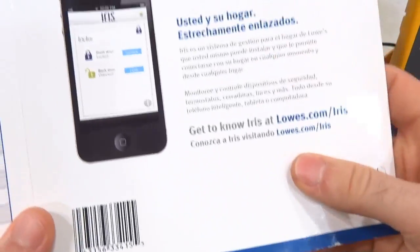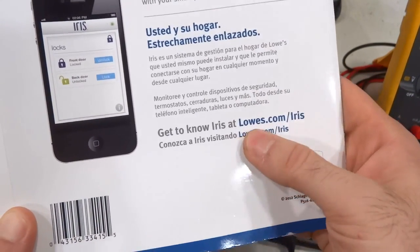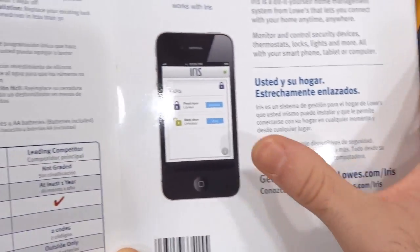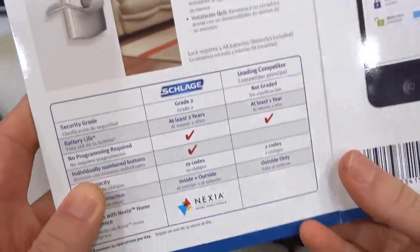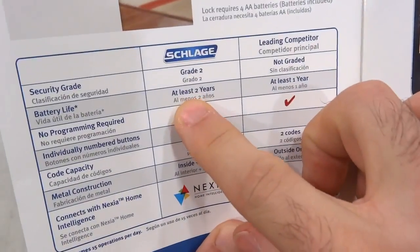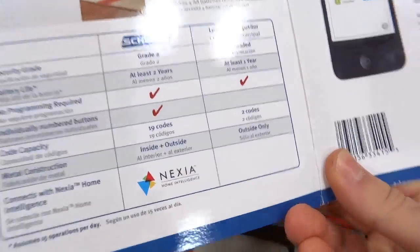I got this from Lowes. They probably OEM it from this company and you go to lowes.com/iris to set it up with your phone. On the spec they claim battery life of at least two years, and that's going to get interesting when we look at the electronics.